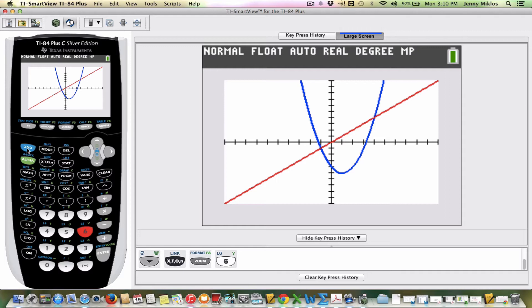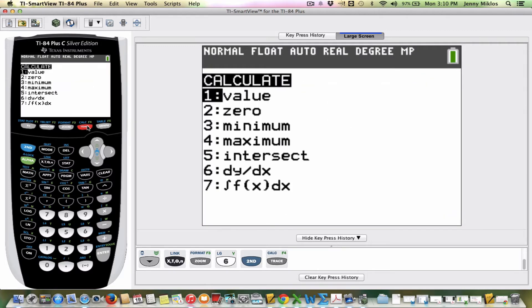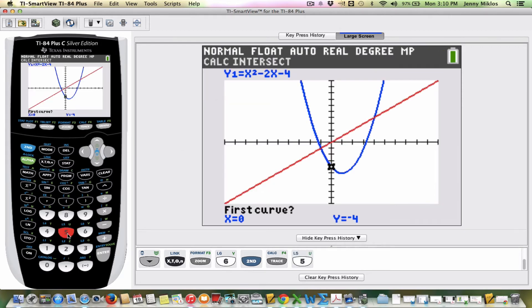So the way that I'm going to find the point of intersection is by pressing 2nd, trace, and that gives you our calculate menu. And we've used this menu quite a bit before to find zeros, to find mins and maxes. And if we look, option 5 here says intersect. So I'm going to choose option 5.